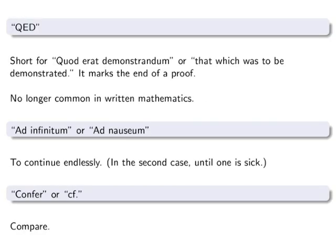Here's a bit of Latin, which, by the way, I have no idea how to pronounce, generally speaking. QED, short for Quod erat demonstrandum, or that which was to be demonstrated. It typically marked the end of a proof. However, it's no longer as common in written mathematics. I still see a lot of teachers using it on the board, but not in formal papers.